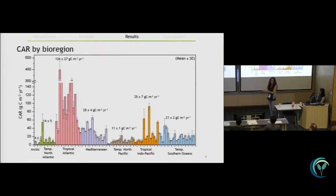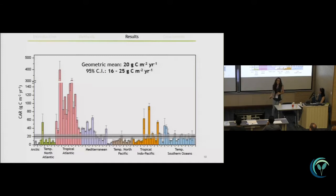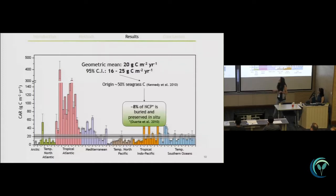Anyway, despite the large variability that we are observing, the central tendency is telling us that seagrass are accumulating carbon at a rate of about 20 grams of carbon per square meter per year and most of them would range between 16 and 25.